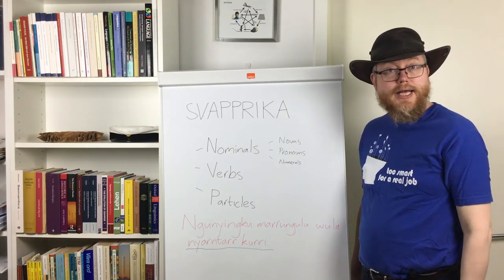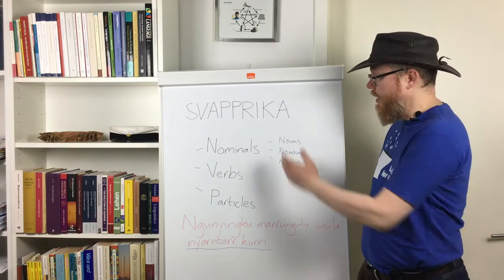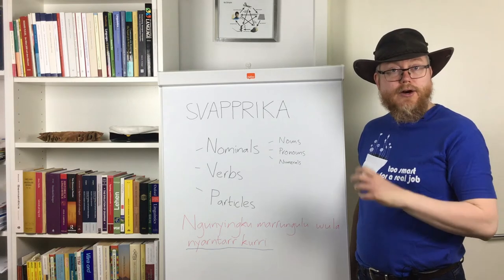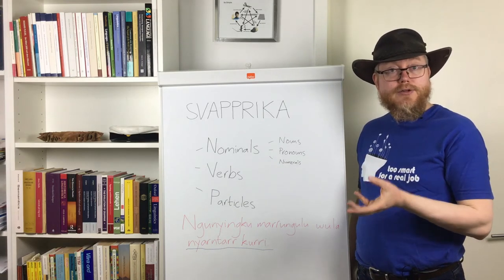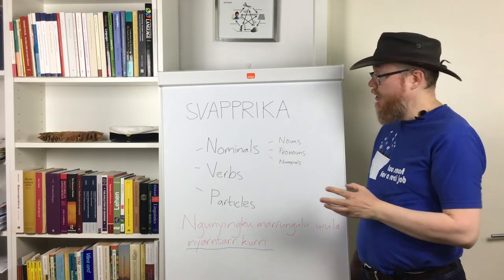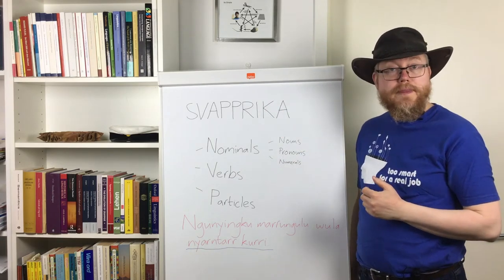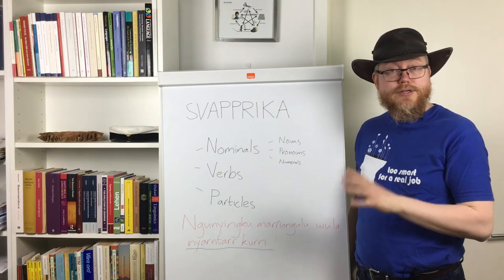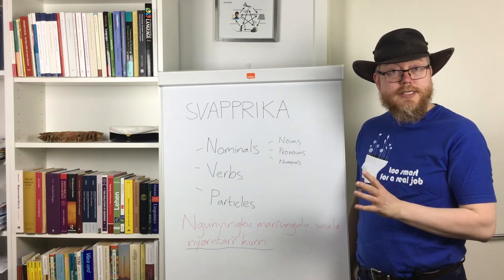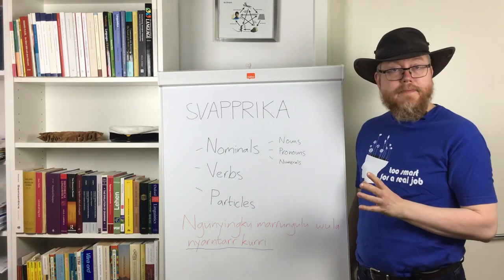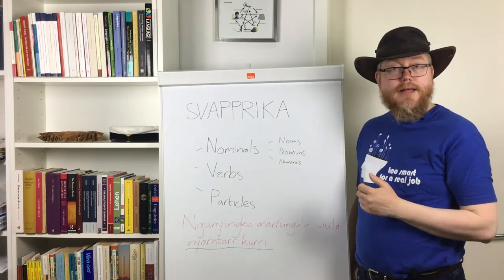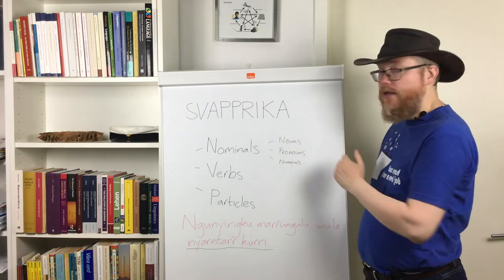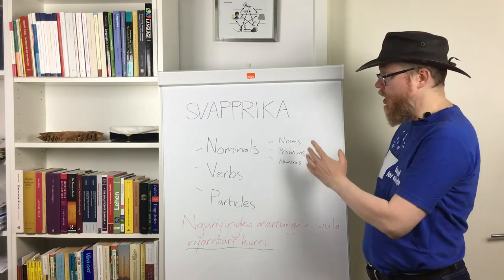R stands for räkneord — numerals. I stands for interjections, which are exclamations like 'ow' or 'ouch', uttered spontaneously and which do not interact with other words in clauses. It has been found in languages around the world that interjections tend to break phonological rules and phonotactic constraints — something they have in common all over the planet. A stands for conjunction — words like 'and' or 'or' — and the final A stands for adverb, which describes the verb.